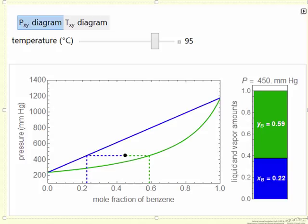When we have the pressure mole fraction diagram, we can change the temperature. When we change the temperature, these two lines, the bubble and dew point lines, are going to move.